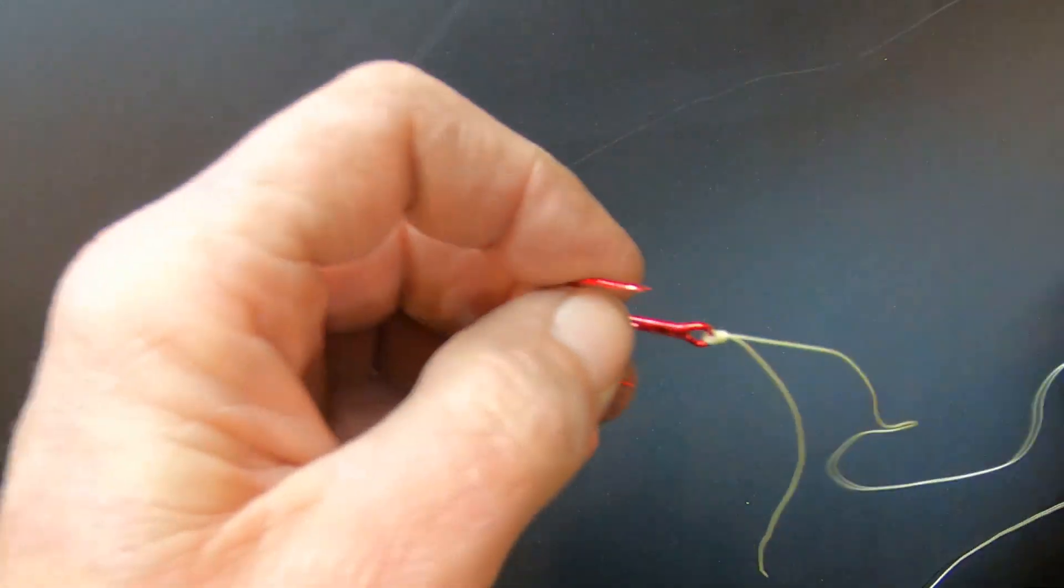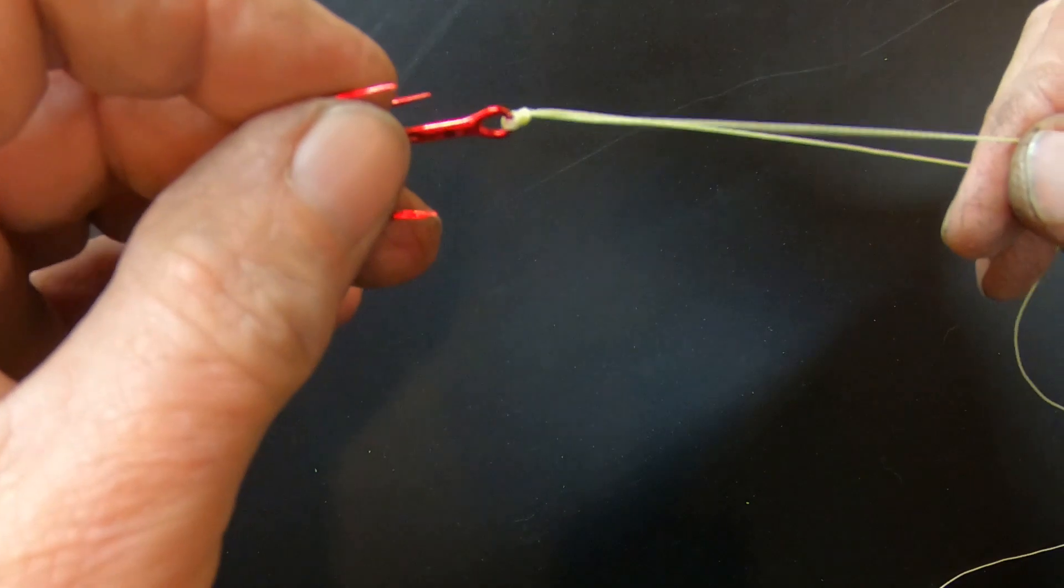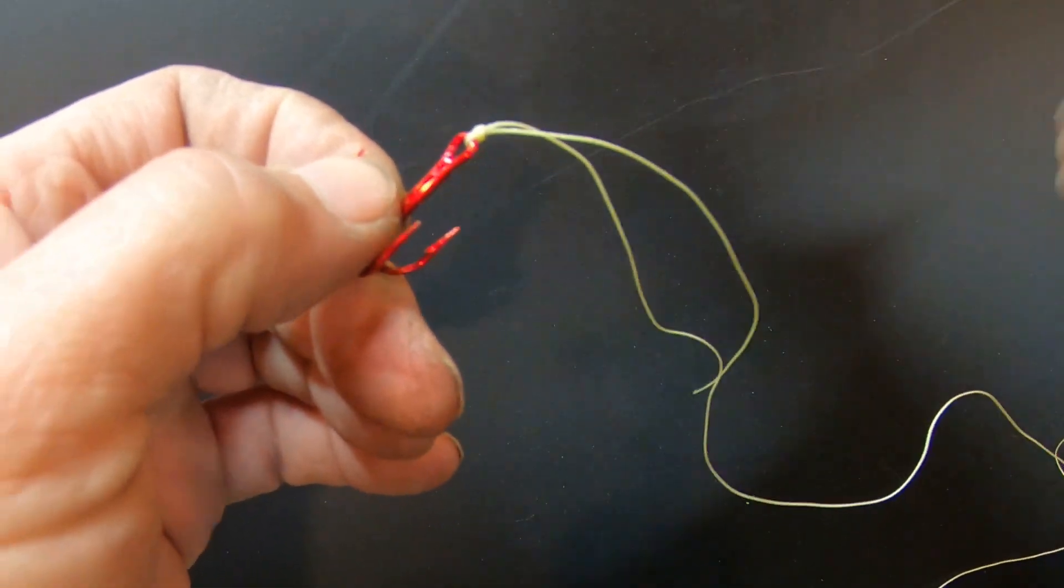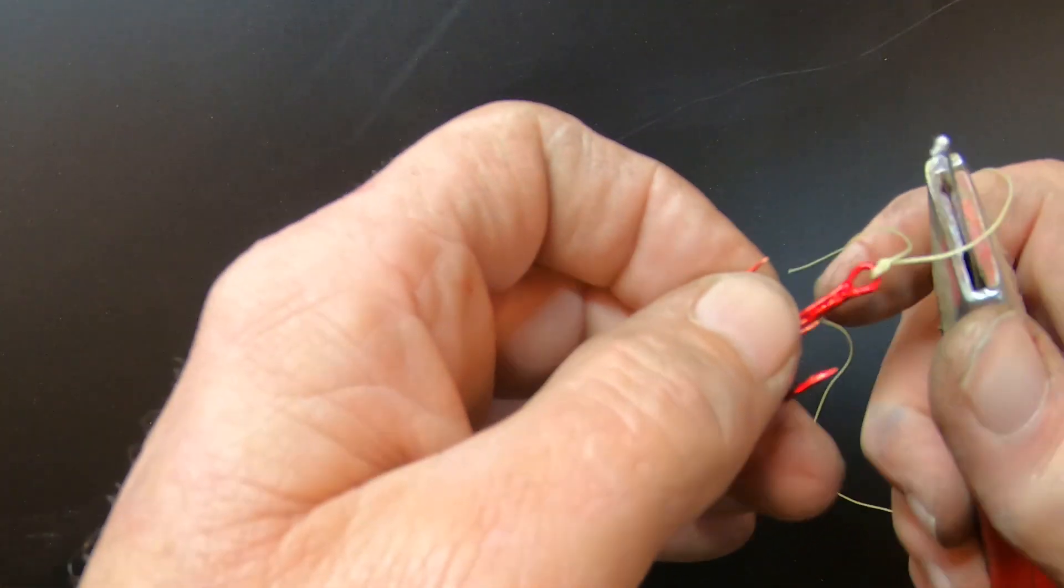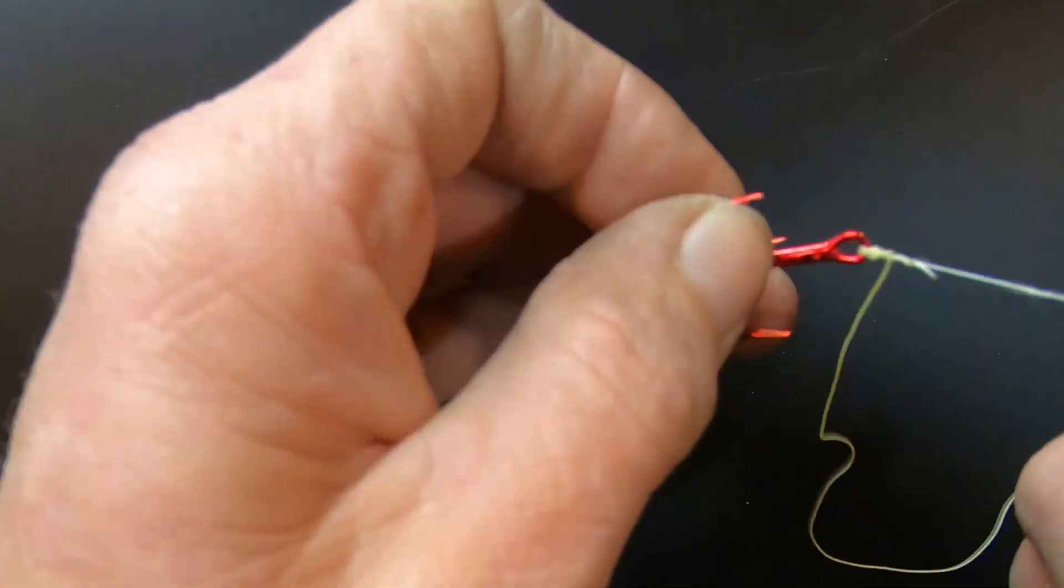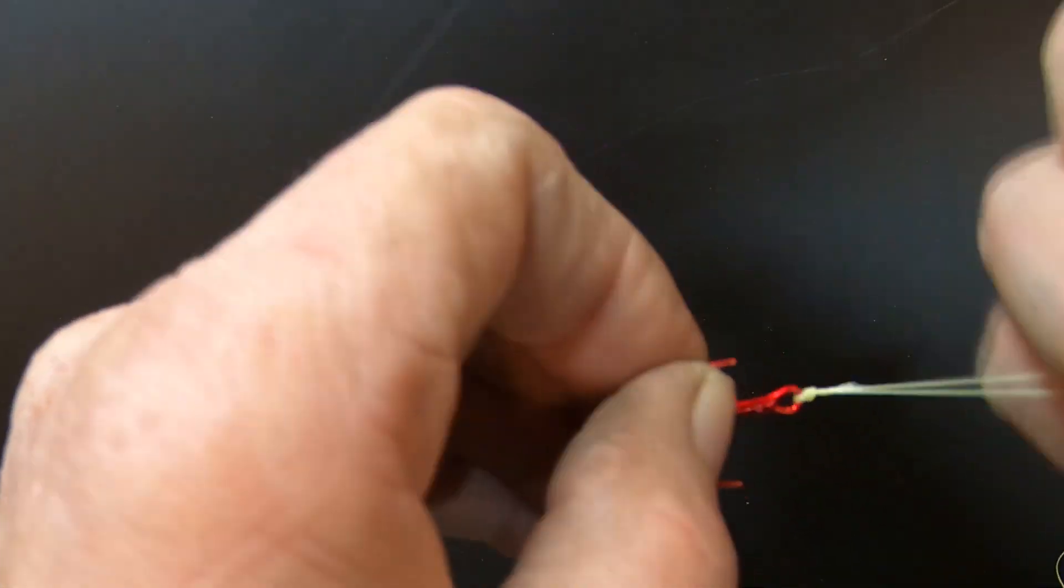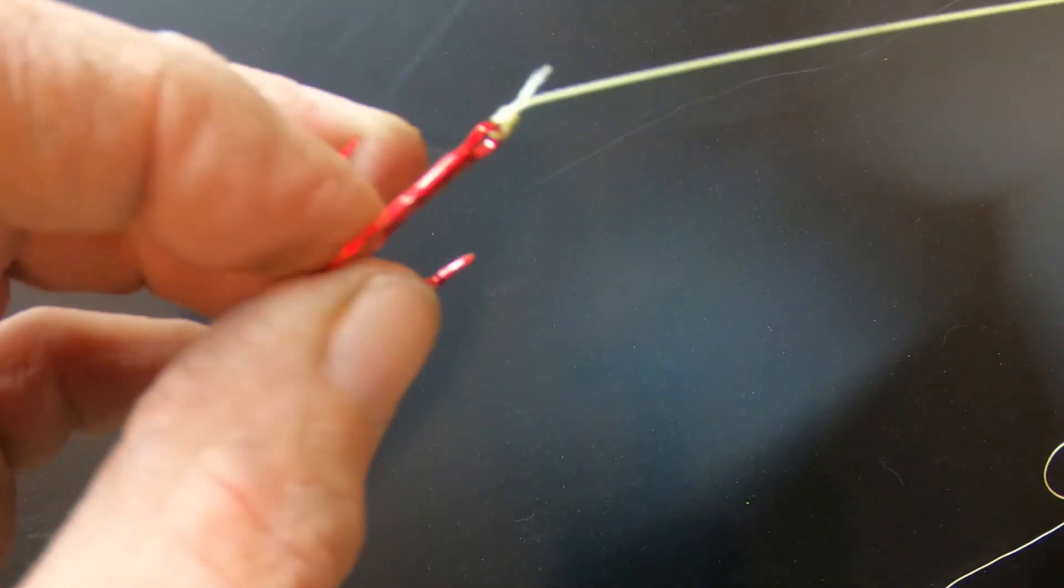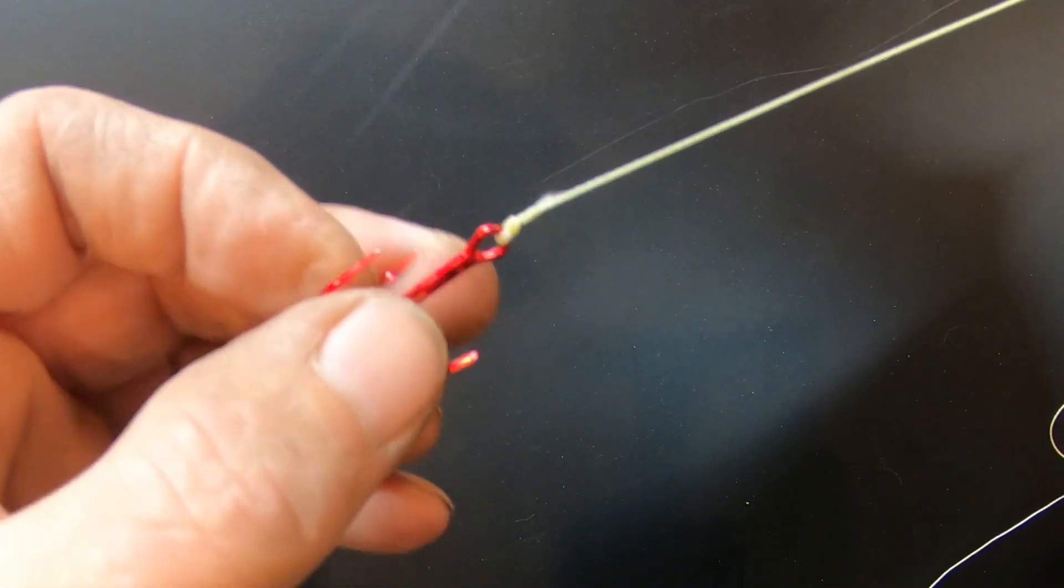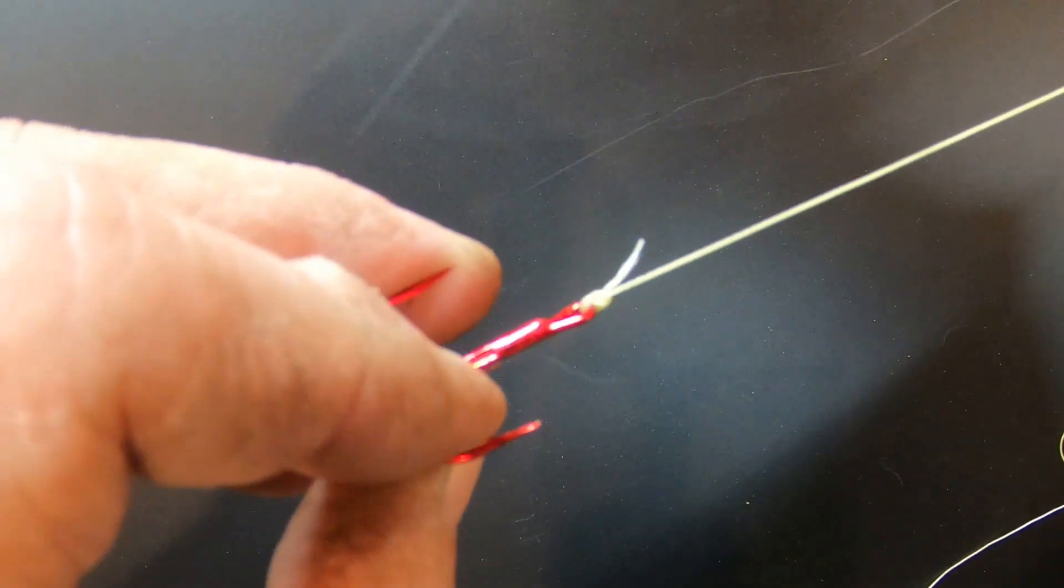And that's the Palomar knot. Take the extra and trim it off - fingernail clippers work great when you're out there. Give it another tug and this is exactly what you want.